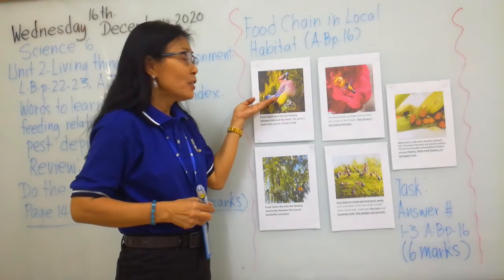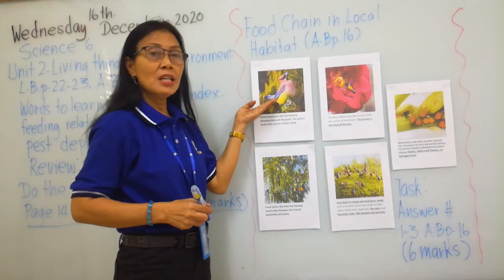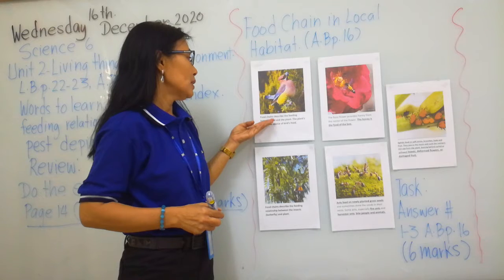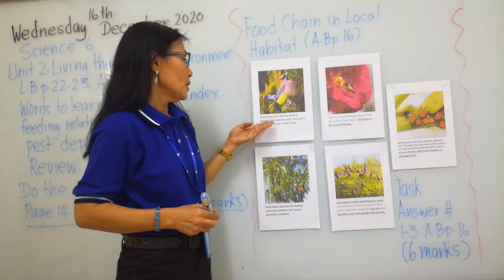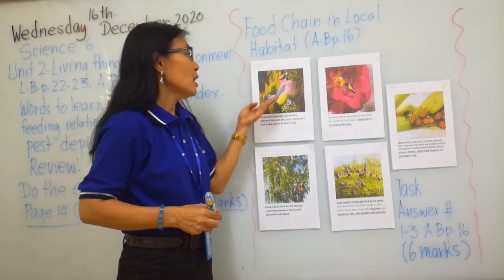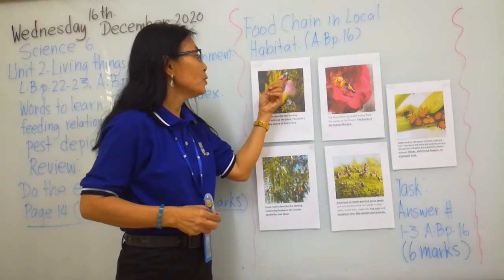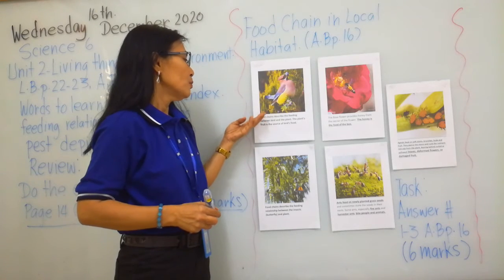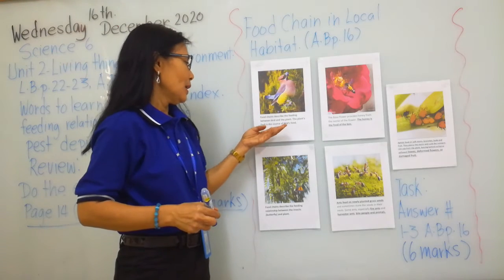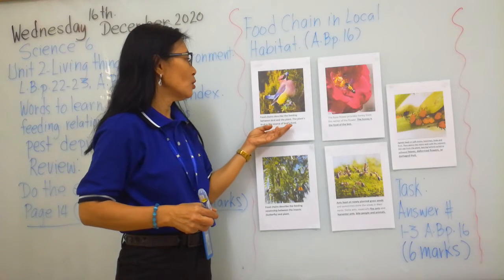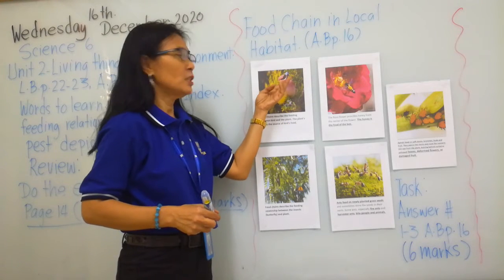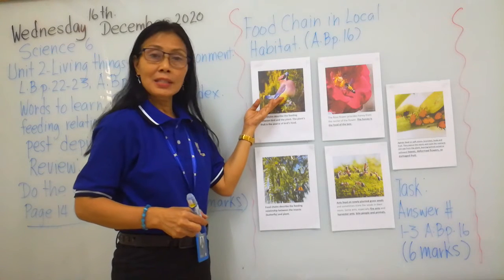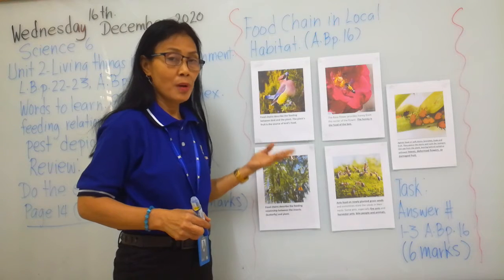So in the first picture, there is a bird on the tree. The bird is feeding himself from the fruit of the tree, and that is what we call food chains. The plant's fruit is the source of the bird's food. Without the plants and the fruit, some birds cannot survive.